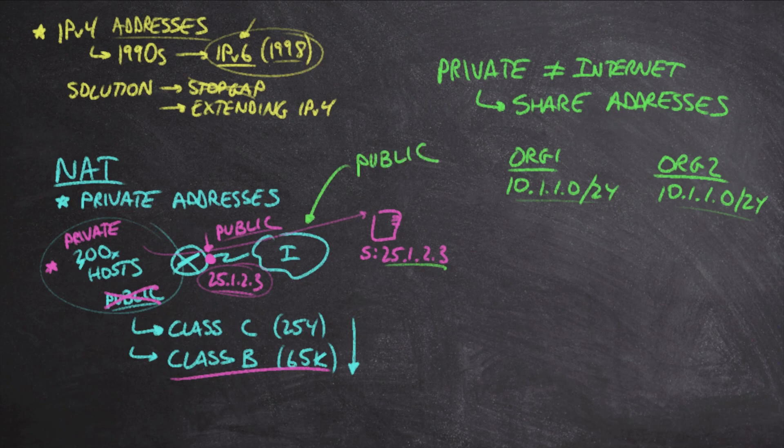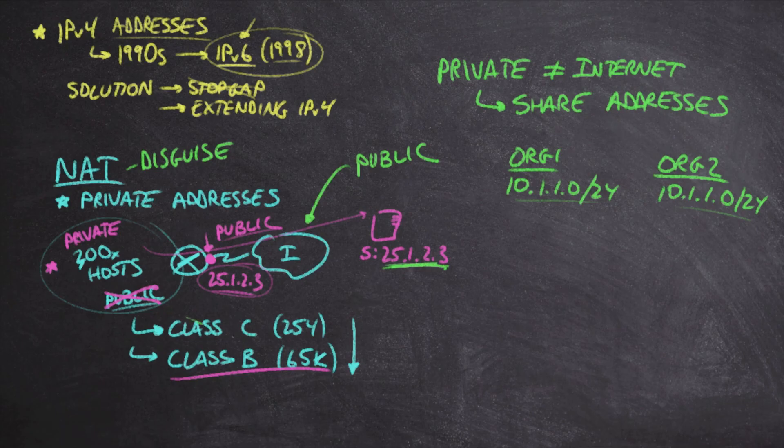And so the idea here is that we're going to use NAT to, again, kind of create this disguise type of mechanism. We're going to disguise these private addresses as if they are public addresses, which allows me now to not need to go out and get public addresses for my network. Instead, I can rely on these private addresses for addressing all the hosts on my network.